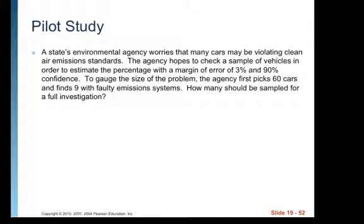Pilot study. A state's environmental agency worries that many cars may be violating clean air emission standards. The agency hopes to check a sample of vehicles in order to estimate the percentage with a margin of error of three percent. So there's our ME is three percent and 90 percent confidence. So there's our confidence level and we can go find our Z star based on that. Remember, you use table T to gauge the size of the problem. The agency first picks 60 cars and finds nine with faulty emission systems. So this is just a little pilot study. How many should be sampled for a full investigation? The reason they give us this information is we can get our estimate for P hat. We don't have to use 0.5 because we have a reasonable estimate to begin with.